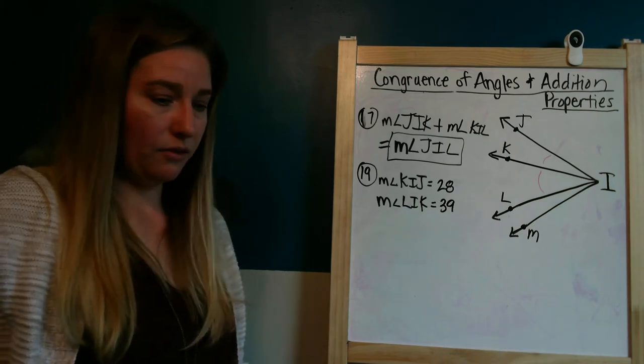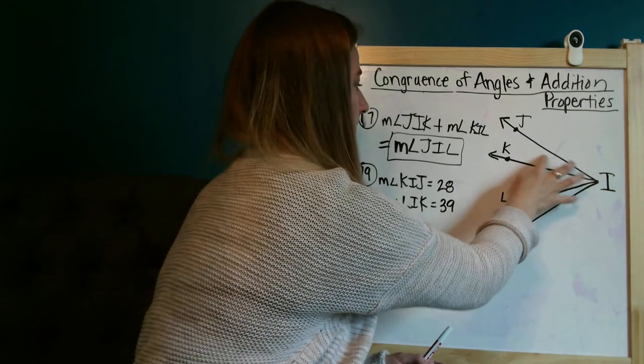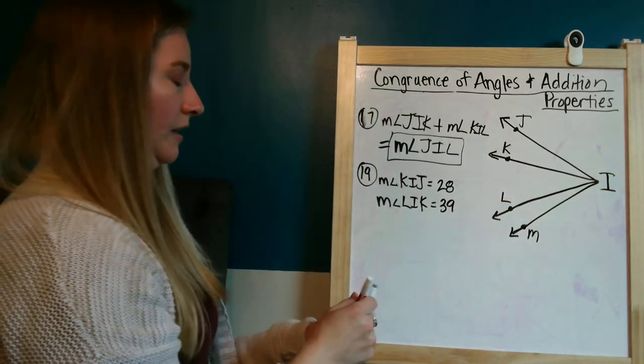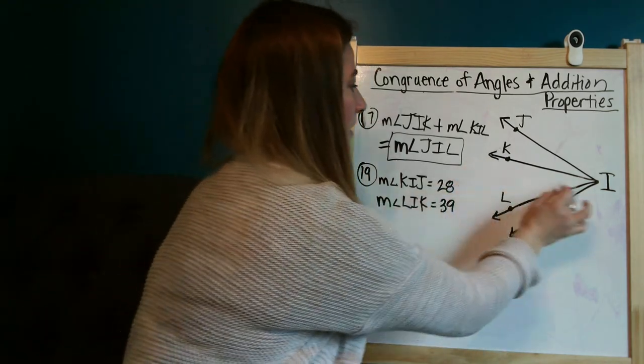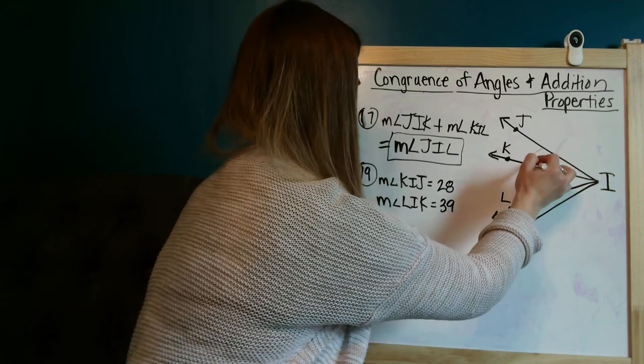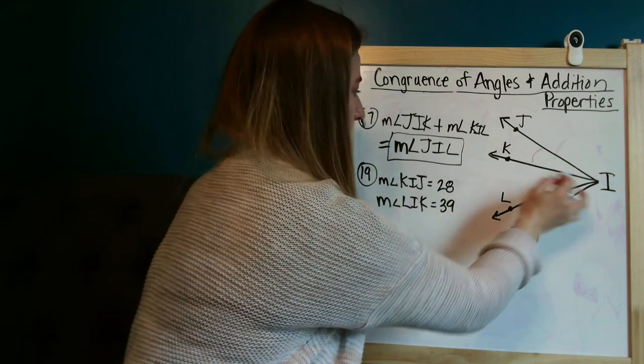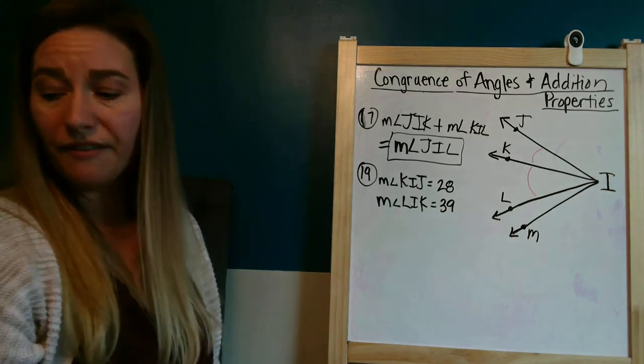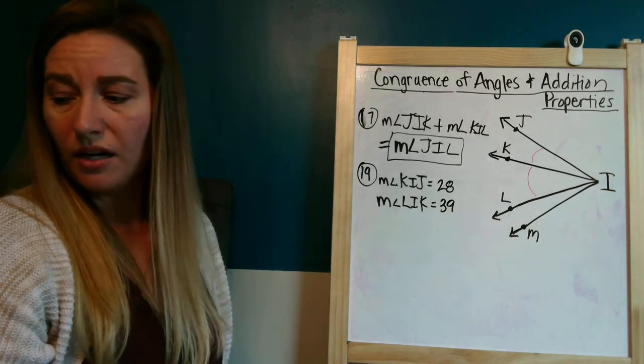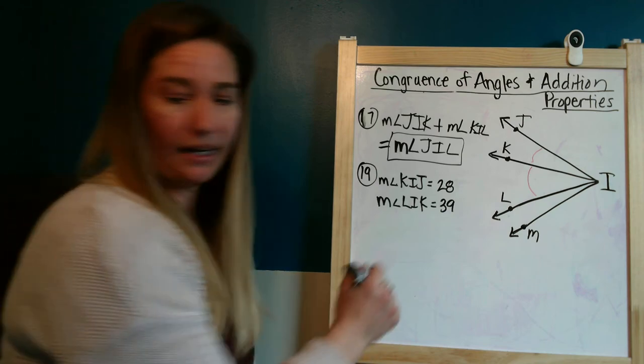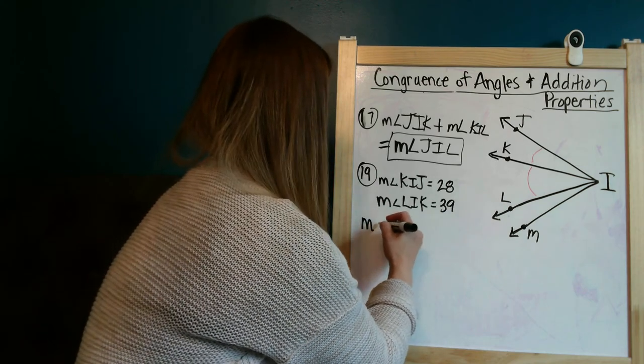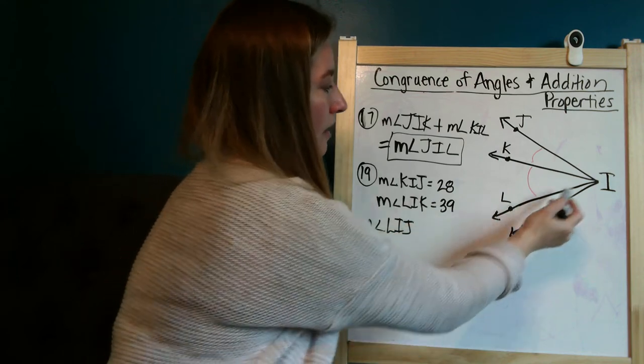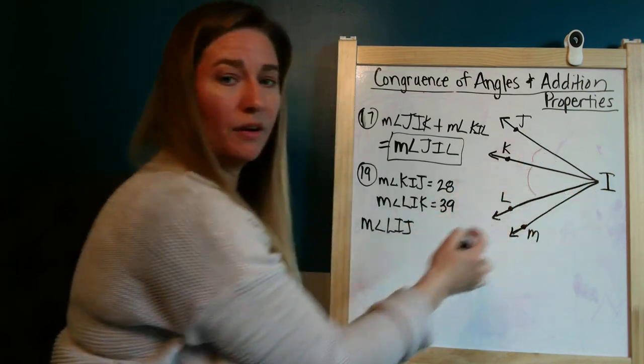So let's look at what angles we're given here. We are given KIJ and LIK. So we're given these two angles again. And we need to find the measure of angle LIJ. And as you can see, LIJ is made up of those two angles.